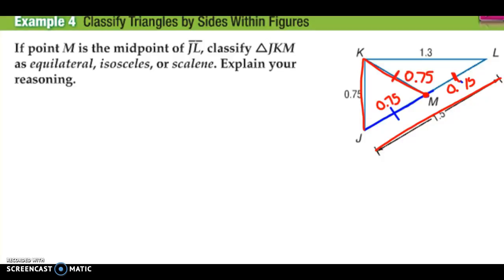And the given side that they give us in our example, J, K, is 0.75. So you'll see that J, K is 0.75, K, M is 0.75, and J, M is 0.75. If all three sides are the same, that means that this is going to be an equilateral triangle. And remember, equilateral is when all three sides are the same.